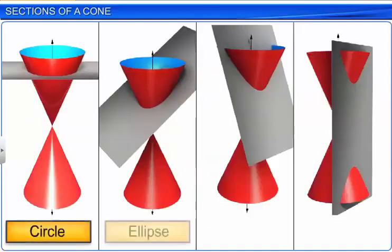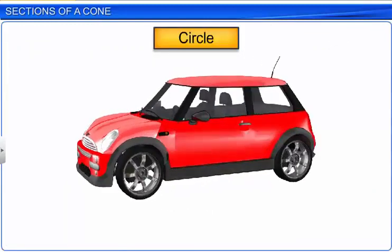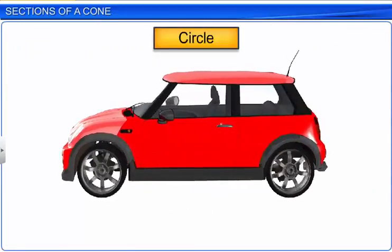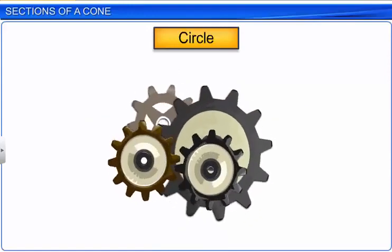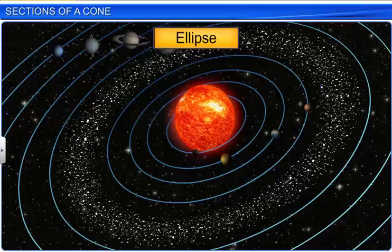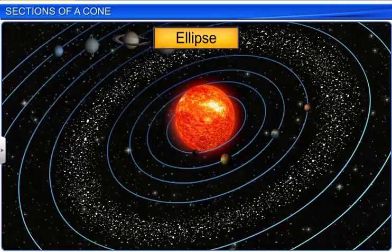Conic sections have a large number of practical applications. Historically, the circle has provided momentum to our economic and industrial development. The ellipse is used extensively for studying planetary motion and making advanced reflectors for automobile headlights.